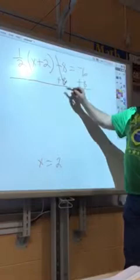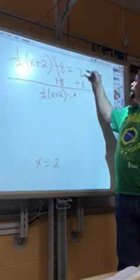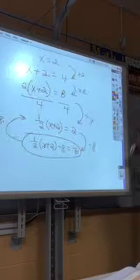So they cancel out, and I'm left with 1 half of X plus 2 equals 2. Real quick flip back to the other page.